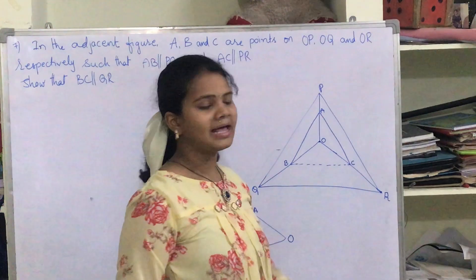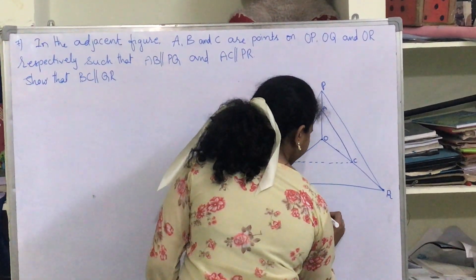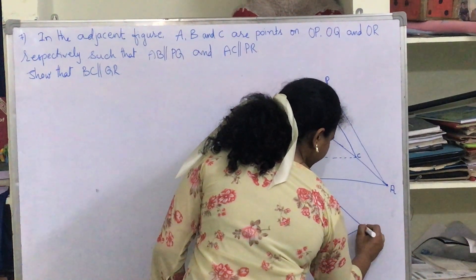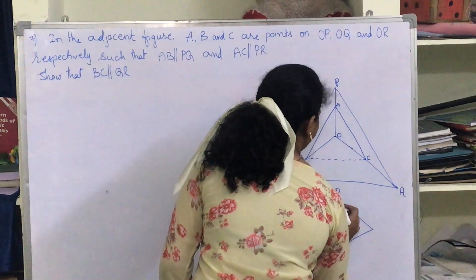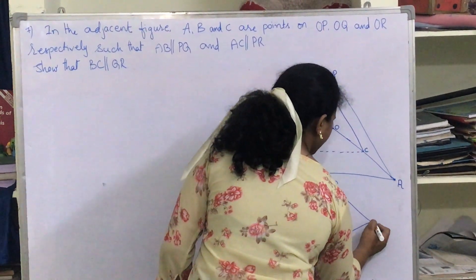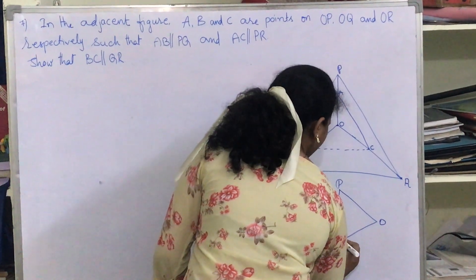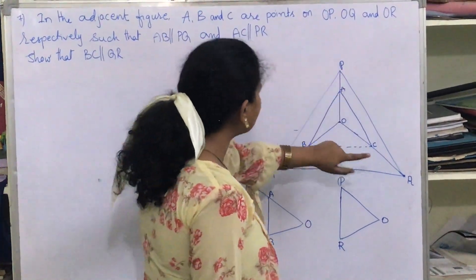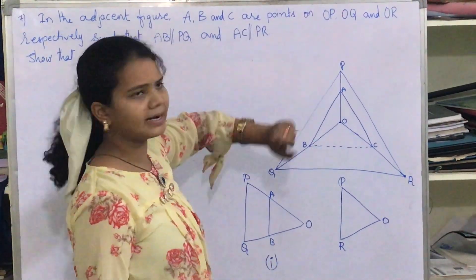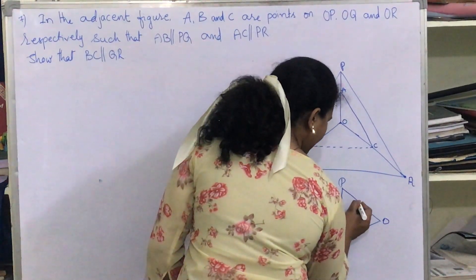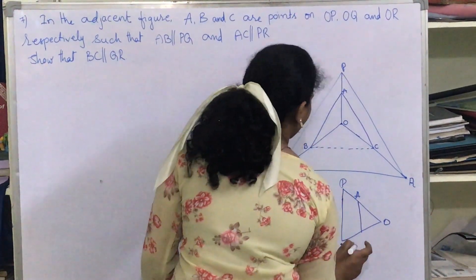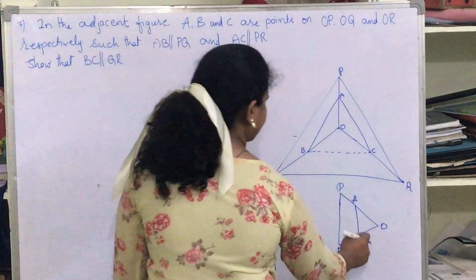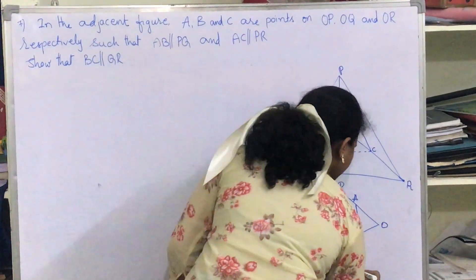Now let's consider the second triangle, POR. So P is here, O here and R here. In triangle POR, AC is parallel to PR. Let me draw a parallel line — let this be A and let this be C. So AC is parallel to PR in the second triangle.